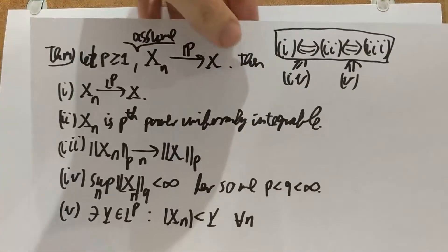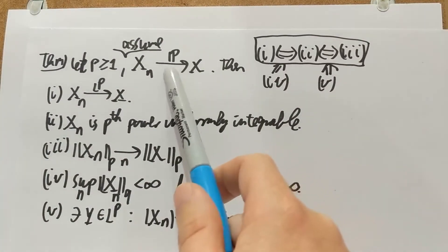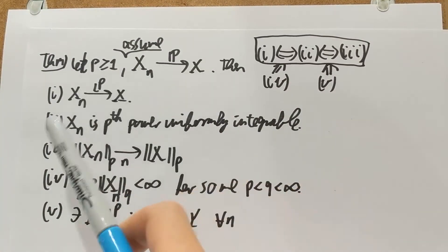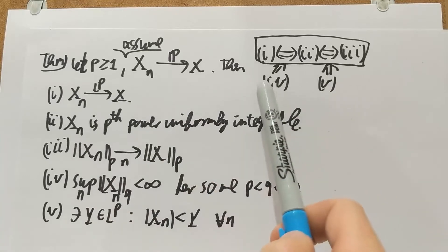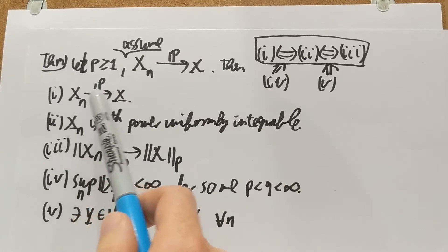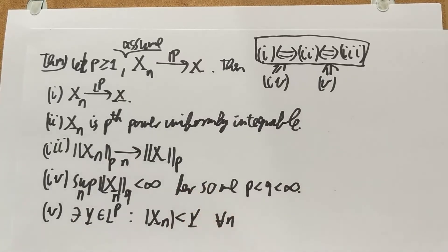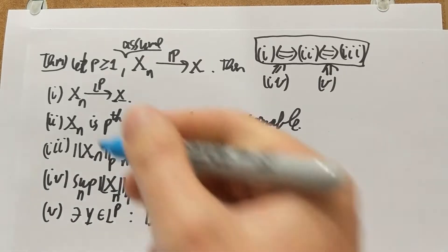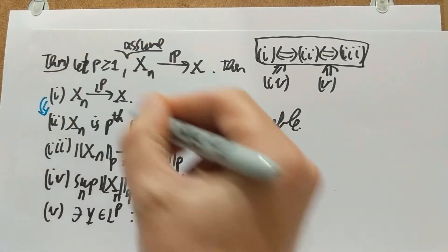Hi everybody! Last time I stated a long theorem about uniform integrability, LP convergence and other things. In this video I'm going to start proving parts of this. The theorem we had in the previous video was this one: suppose you have convergence in probability, and then you have these statements, the first three of which are equivalent, and four and five each imply those three. The first one was LP convergence and the second one is that xn is p-th power uniformly integrable. In this video I'm going to do one implies two.